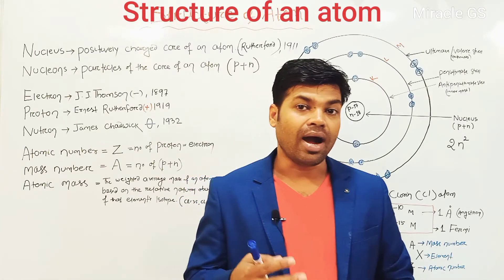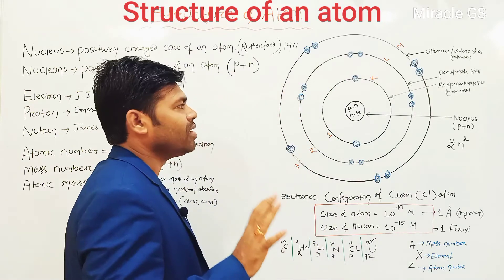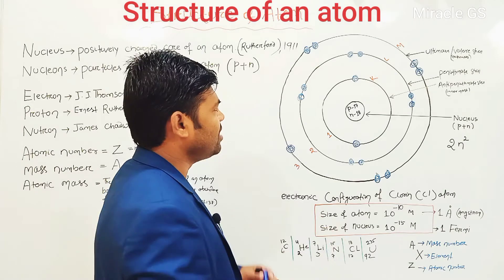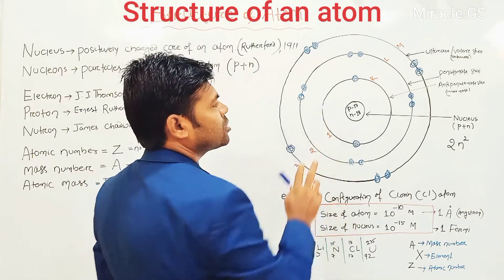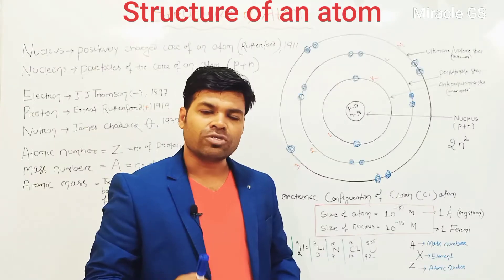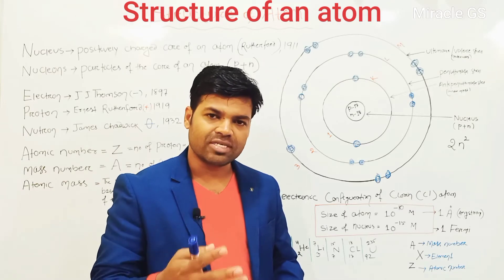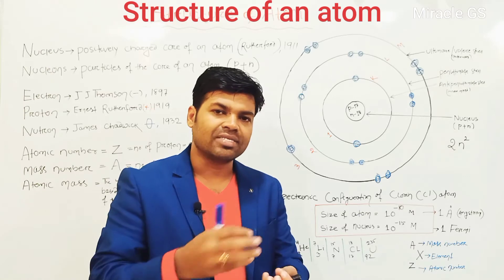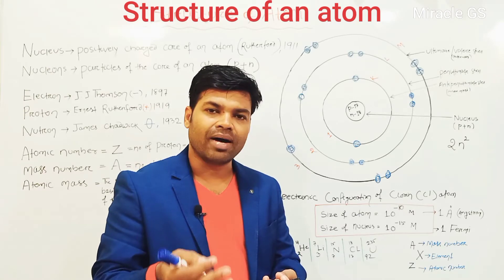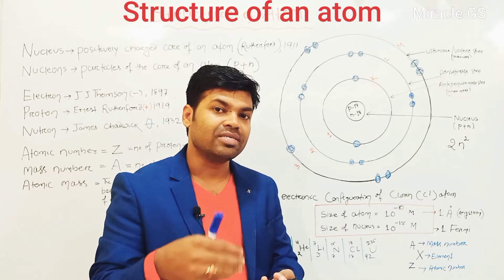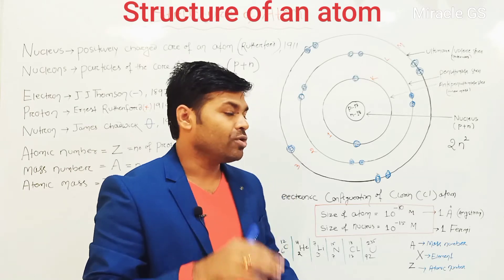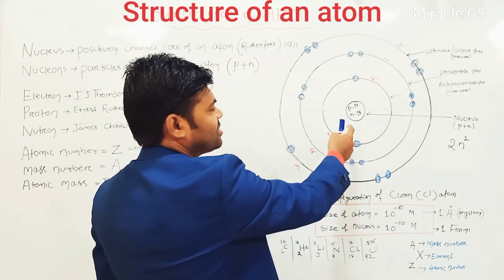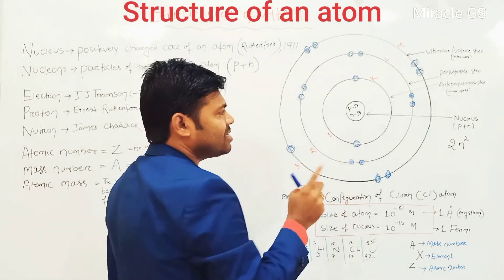So now let us understand what is the structure of atom. Whenever a question about how an atom looks comes up, this picture must come to your mind. The structure of atom is nothing — it is just like the solar system in which around the sun the eight planets — Mercury, Venus, Earth, Mars, Jupiter, Saturn, Uranus, Neptune — revolve.